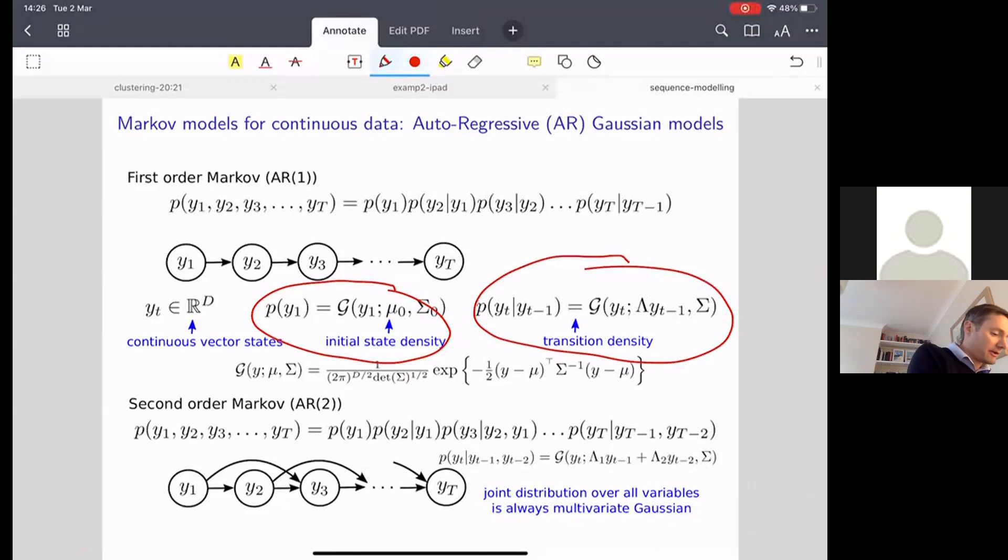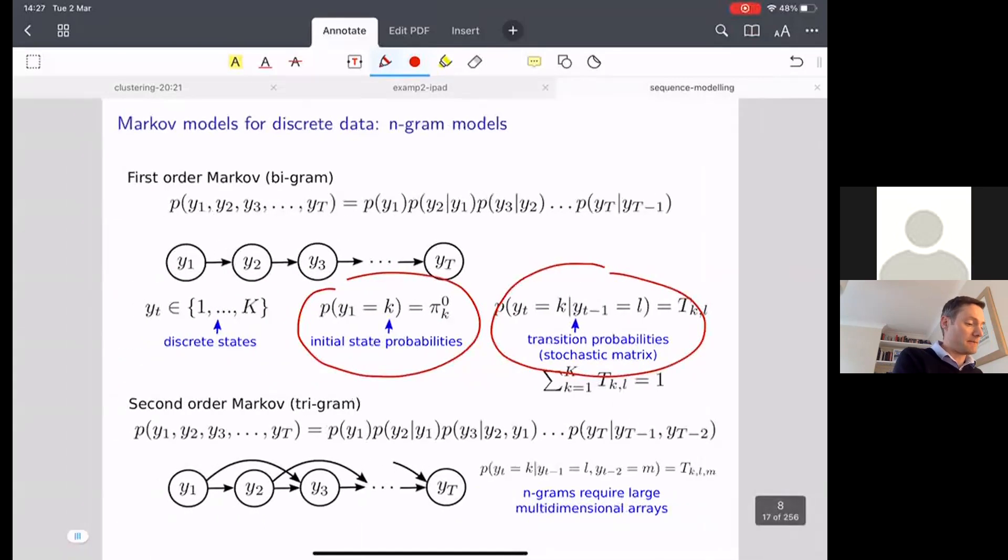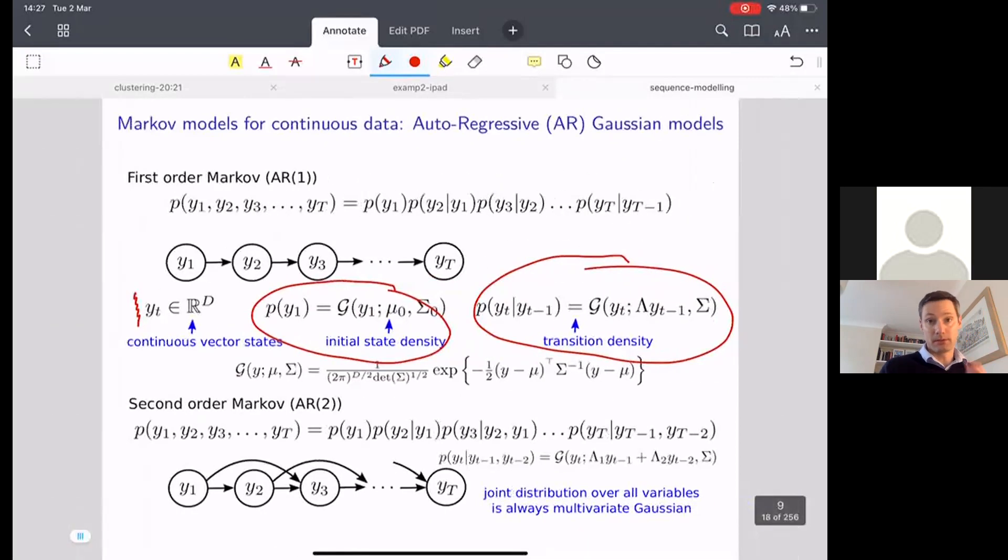One thing which is different is that the data now are going to be assumed to be d-dimensional real valued vectors. So whereas y before was a discrete variable that took a value from one to k, now y is going to be assumed to be a vector in general with real valued elements, and the dimension of that vector is going to be d.